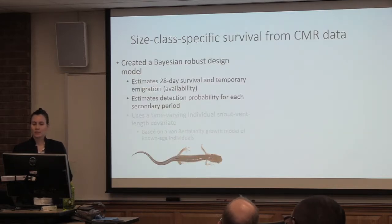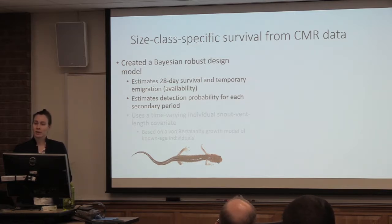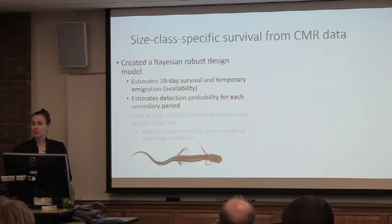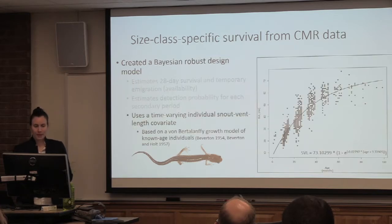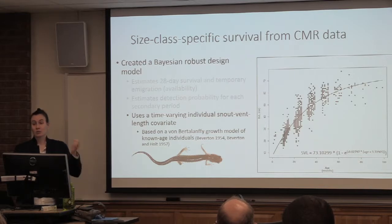For size-class-specific survival estimates from the capture-mark-recapture data, we created a Bayesian robust design model. It estimates 28-day survival and temporary immigration — or availability — and estimates detection probability for each secondary period. We used a time-varying individual snout-vent length covariate, which is the key part of this model.